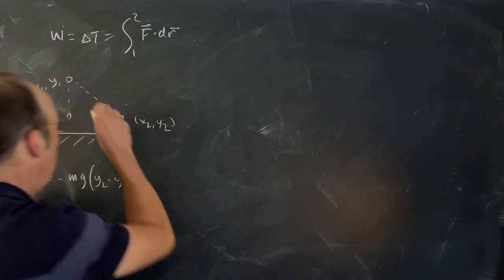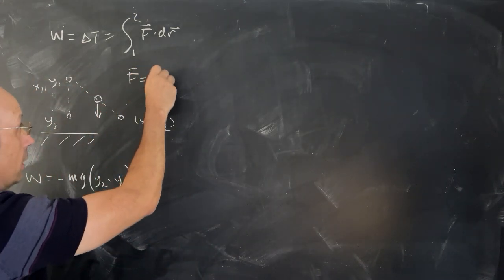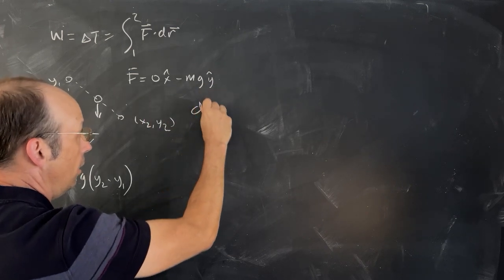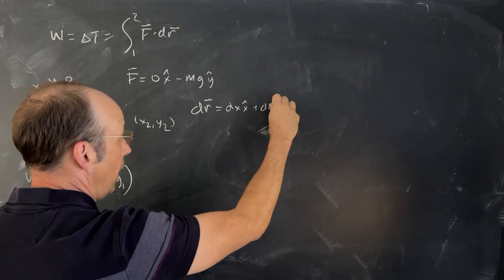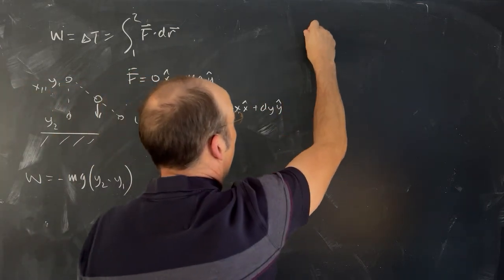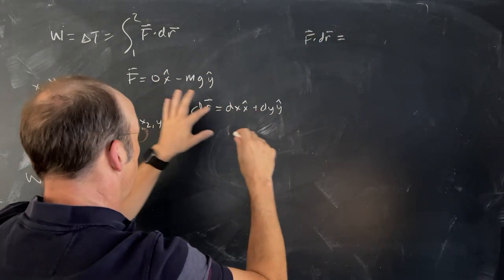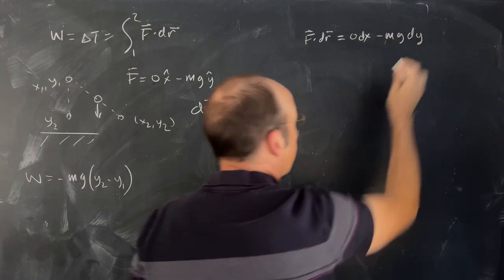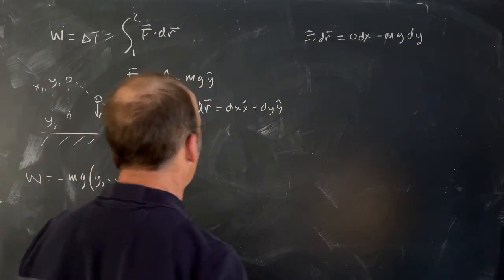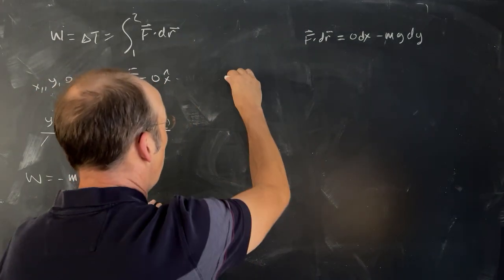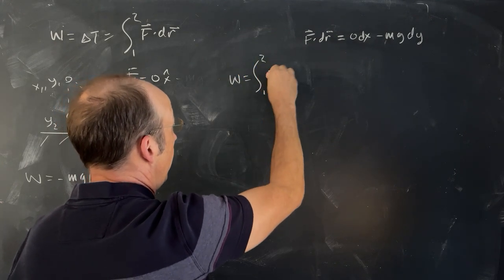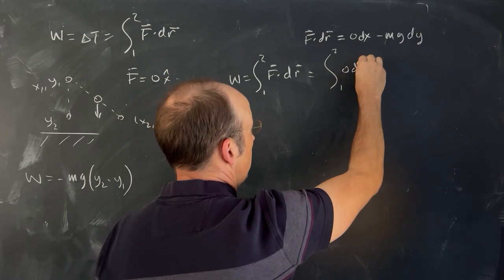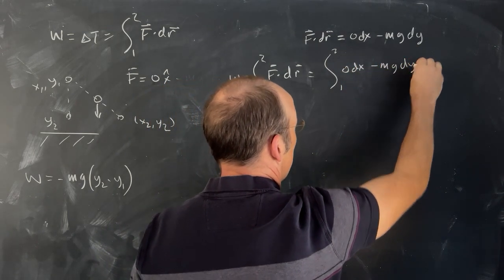Let's just do the whole thing again. I have an object, and the force is still F = 0 x̂ minus mg ŷ. And dr is still dx x̂ plus dy ŷ. So F·dr is the dot product, which gives 0 times dx minus mg times dy. So now I can write work as the integral from 1 to 2 of 0 dx minus mg dy.